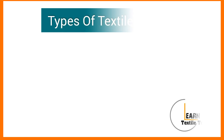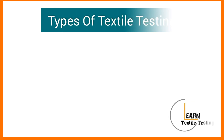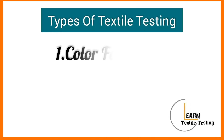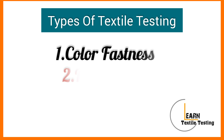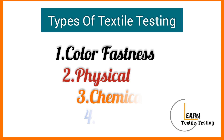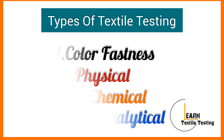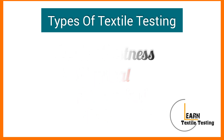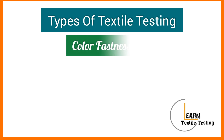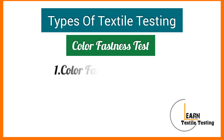Types of textile testing: number one, colorlessness; number two, physical; number three, chemical; number four, analytical. Colorlessness test number one: